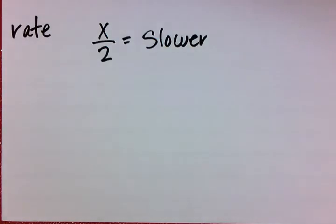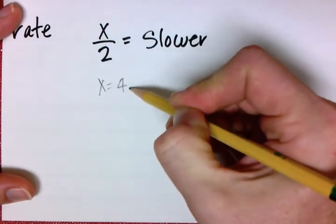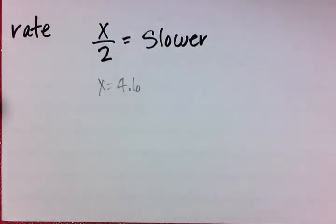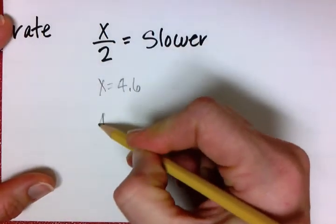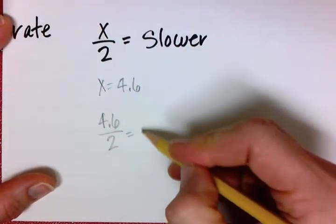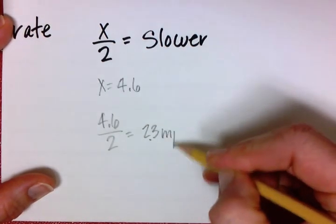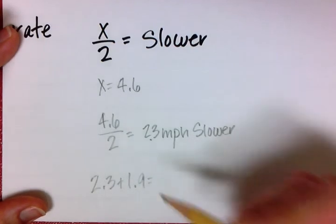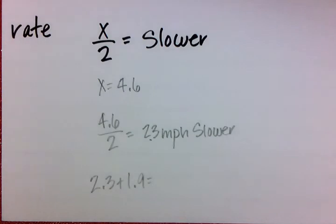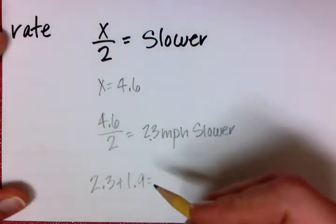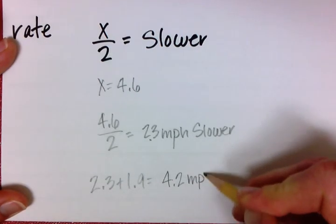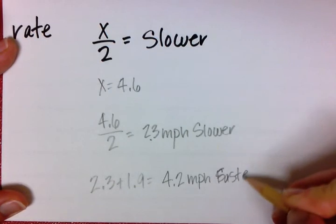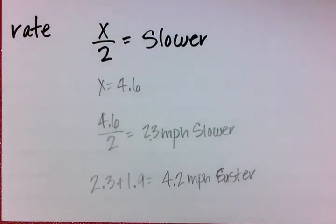We've established that x equals 4.6. Plugging that back into the slower hiker's rate: 4.6 divided by 2 is 2.3 miles per hour. Since the faster hiker is 1.9 miles per hour faster, we add 2.3 plus 1.9 to get 4.2 miles per hour for the faster hiker. So the slower hiker's rate is 2.3 miles per hour and the faster hiker's rate is 4.2 miles per hour.